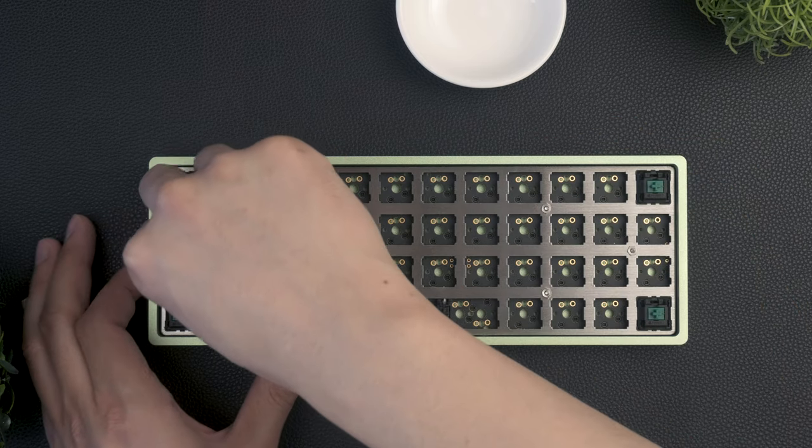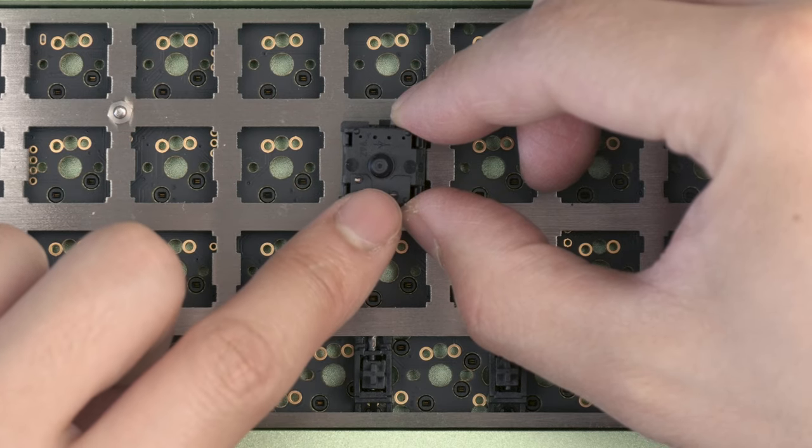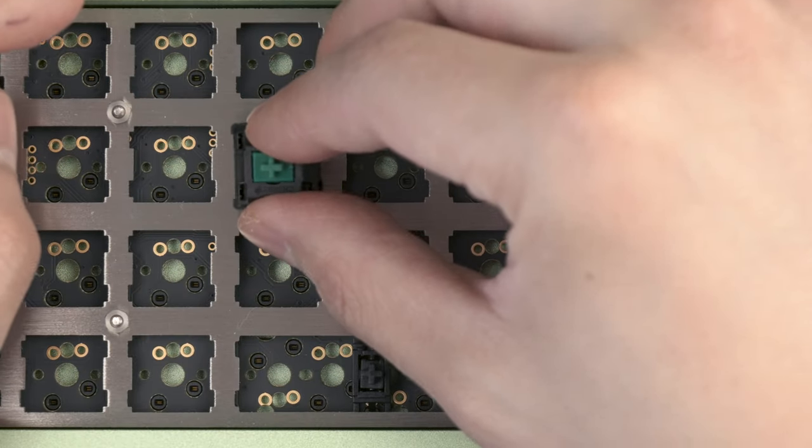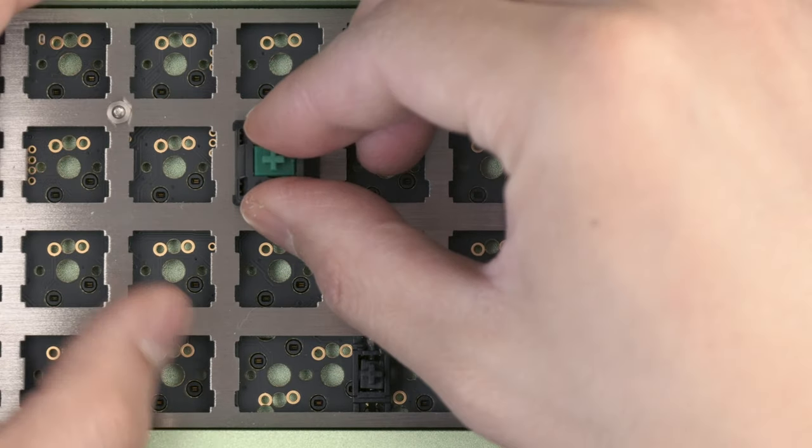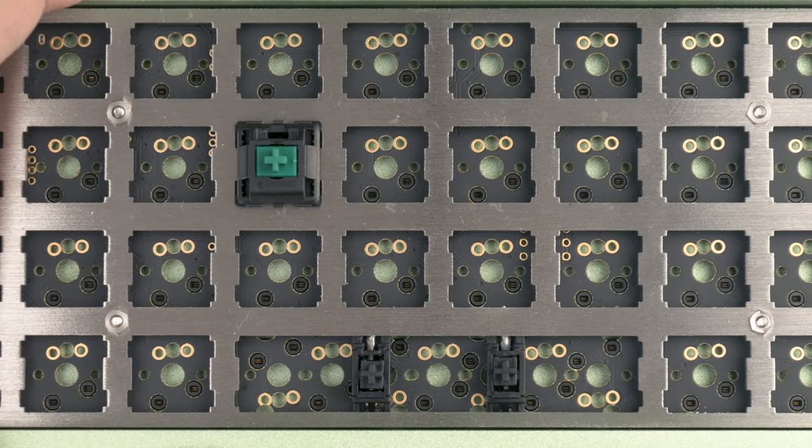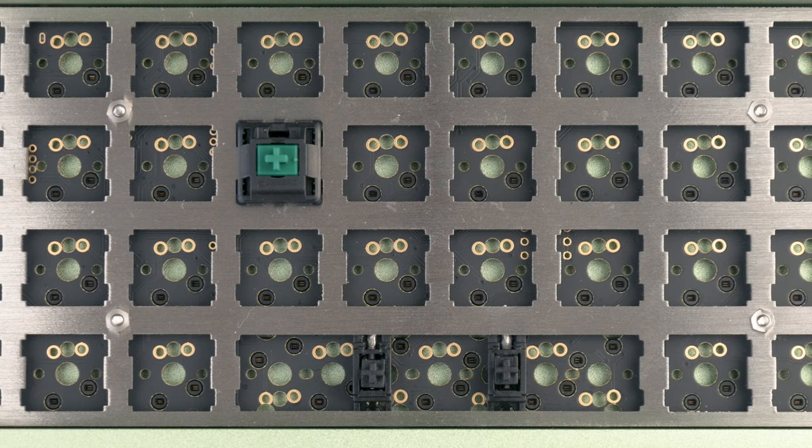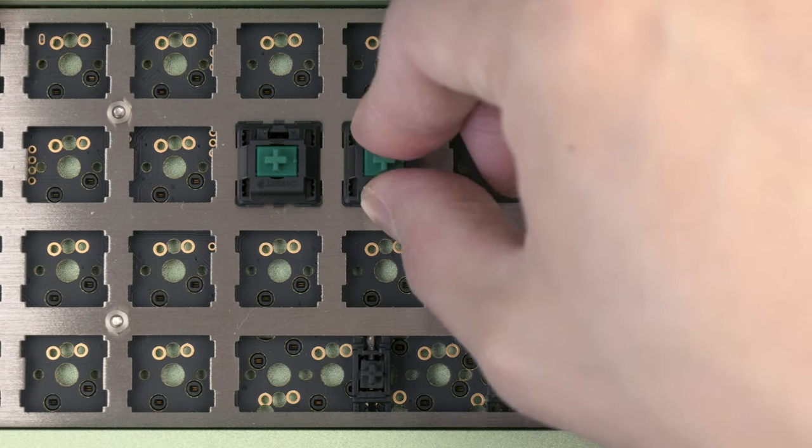Now, we can add the remaining switches. For most switches on the board, the pins should be on the bottom side of the keyboard so they line up with the hot swap sockets. To insert, center the switch over the plate. You want to make sure all sides are level so the pins can easily slide down into the socket. Using two fingers, push straight down with even pressure to seat the switch.